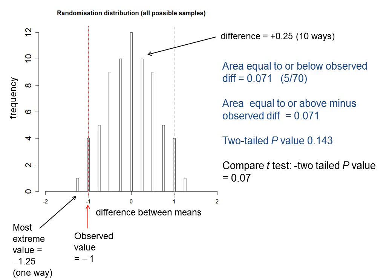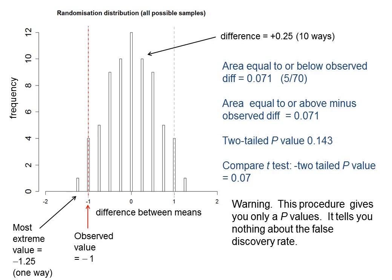Of course, it's important to note that this procedure only gives you a p-value. It doesn't tell you the probability that you're wrong. It says nothing at all about the false discovery rate. So you have to be pretty careful how you interpret that p-value. That's the subject of another talk.